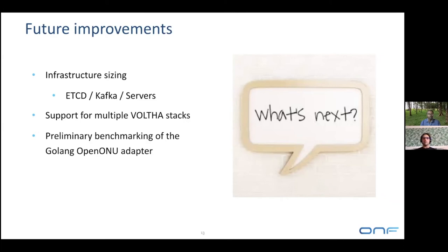We are now in the process of releasing Volta 2.4, which should be out in the next two or three weeks. Infrastructure sizing will be the big task for Volta 2.5. At the same time, one of our ONU and OLT vendors is putting a lot of effort into migrating from the Python version of the OpenONU adapter to a Golang-based version, and we'll be focusing from the very early stages on benchmarking the performances of the new adapter so we can compare them with the existing one. We already have the first few numbers, and they look very promising.